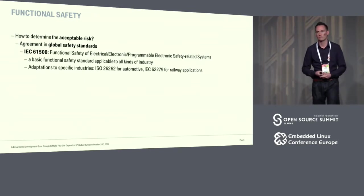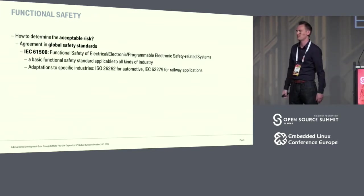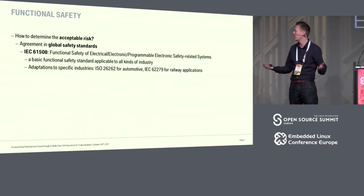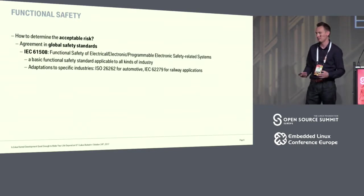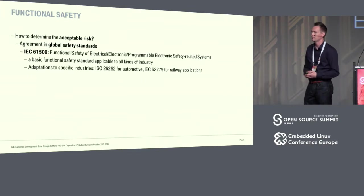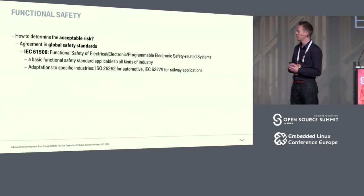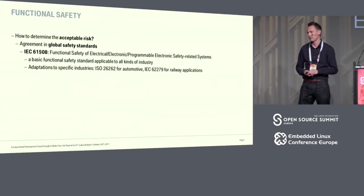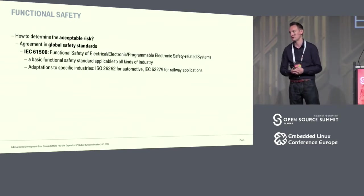The definition says we have to show freedom from unacceptable risk. Who decides which risk is acceptable and which is not? Is it okay if a train crashes every hundred hours? If a flight crashes every thousand hours? You'll find out we have to come to a consensus among the whole society. And to do that, the process was that there was an agreement on a global safety standard — IEC 61508 — which tells you the functional safety requirements that apply to all different kinds of industries and tells you what you should do to build a safe product.